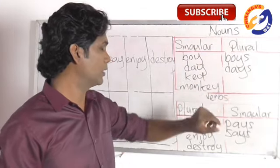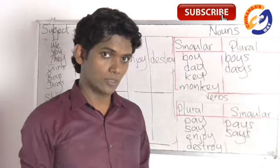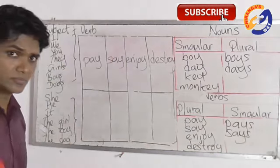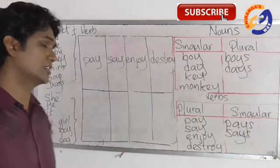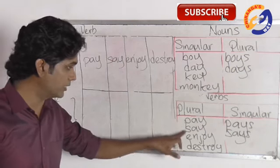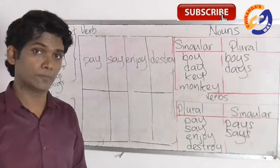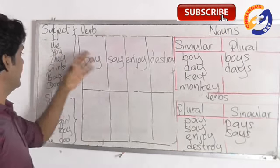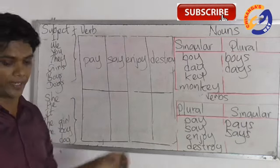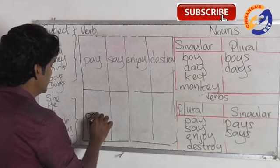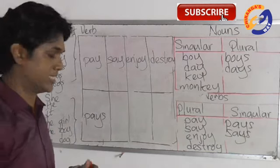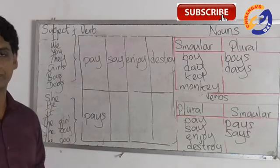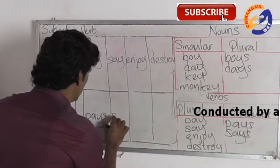Let's go to the lesson — Simple Present Tense. The subject is here and the verb is here. We know that when subjects are in the plural form, verbs stay in the plural form and we don't change anything: I pay, we pay, you pay, they pay, girls pay, boys pay, dogs pay. When it goes to singular, we add S: she pays, he pays, it pays, the girl pays, the boy pays, the dog pays.